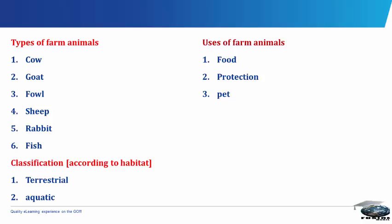Fertilizer. Manure can be spread on fields to increase crop yield. This is an important reason why, historically, plants and animal domestication have been intimately linked. Manure is also used to make plaster for walls and floors and can be used as a fuel for fires. The blood and bones of animals are also used as fertilizer.